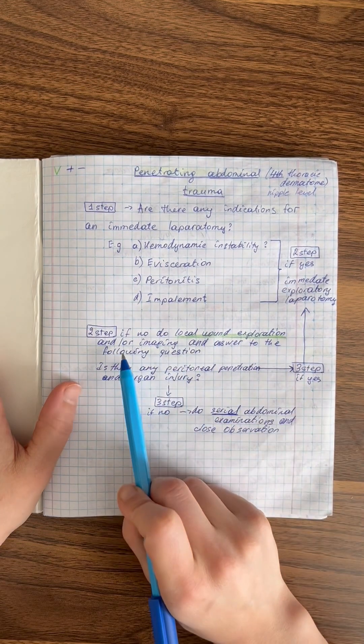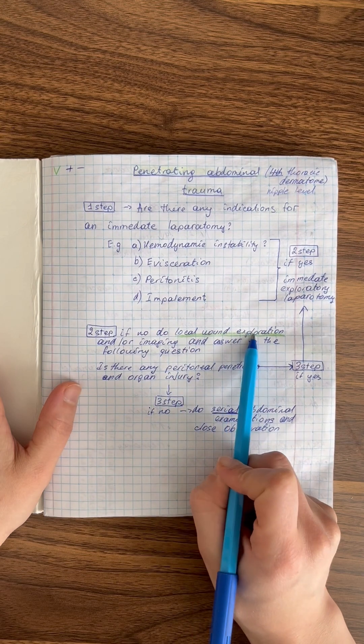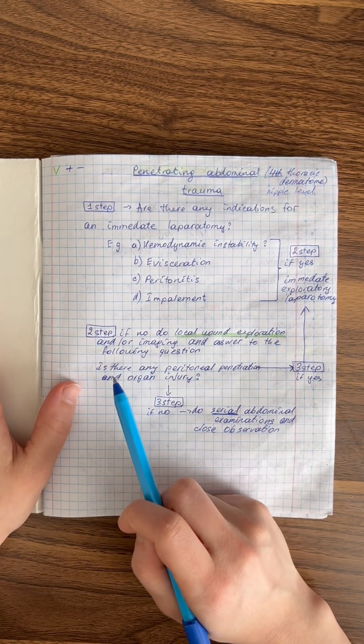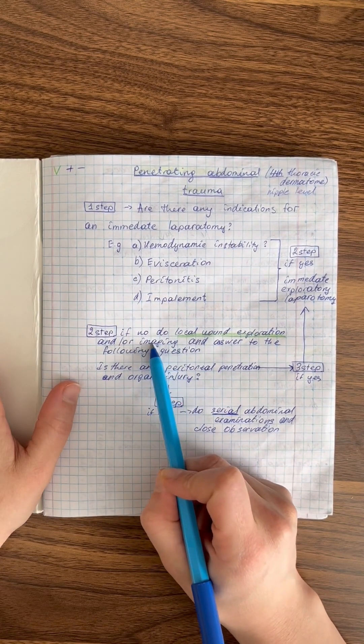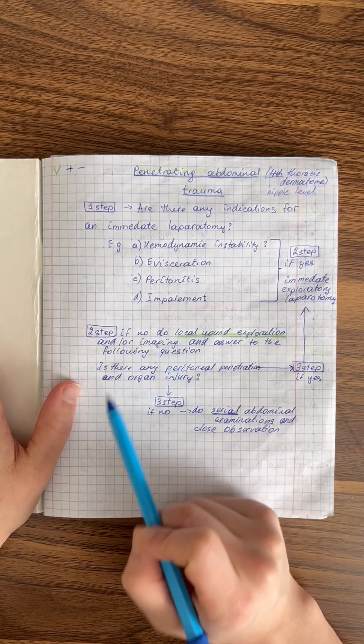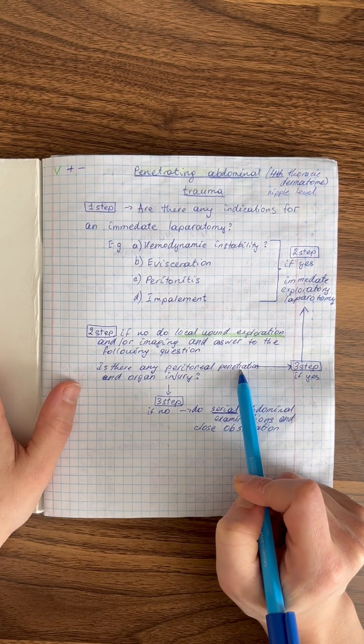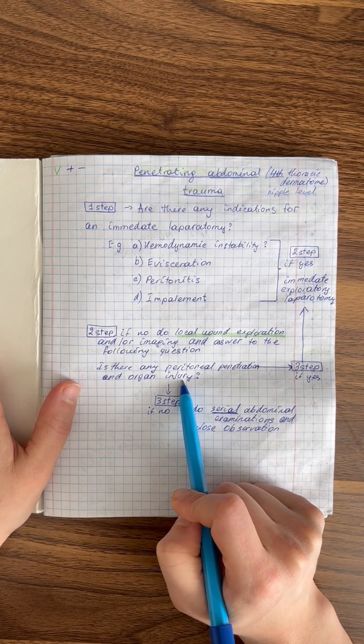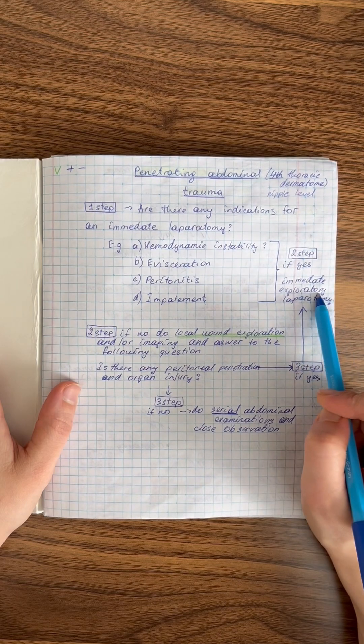If these signs are not present, the second step is to perform a local wound exploration. Here we assess the depth, size, and general features of the wound and, if necessary, perform imaging. A key question to ask is whether there is any peritoneal penetration and to assess for any additional organ injury. If the peritoneum is penetrated, the next step is to proceed with an immediate exploratory laparotomy.